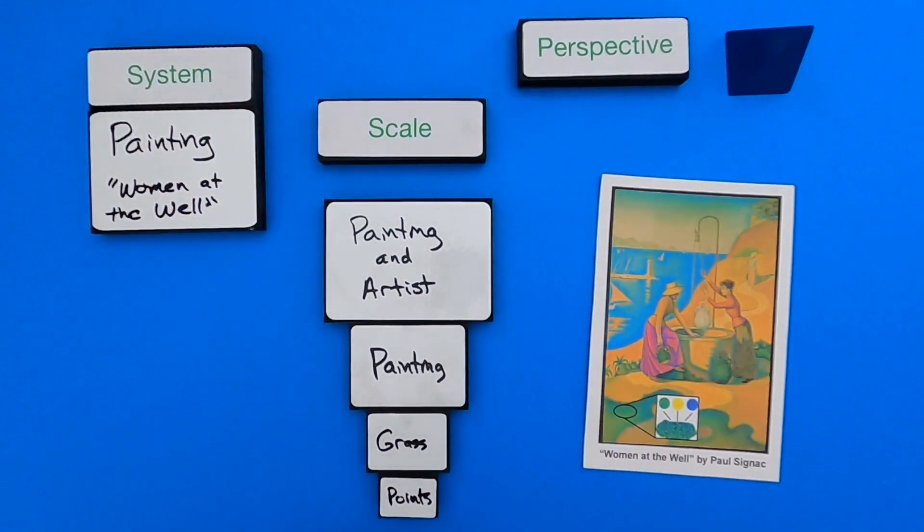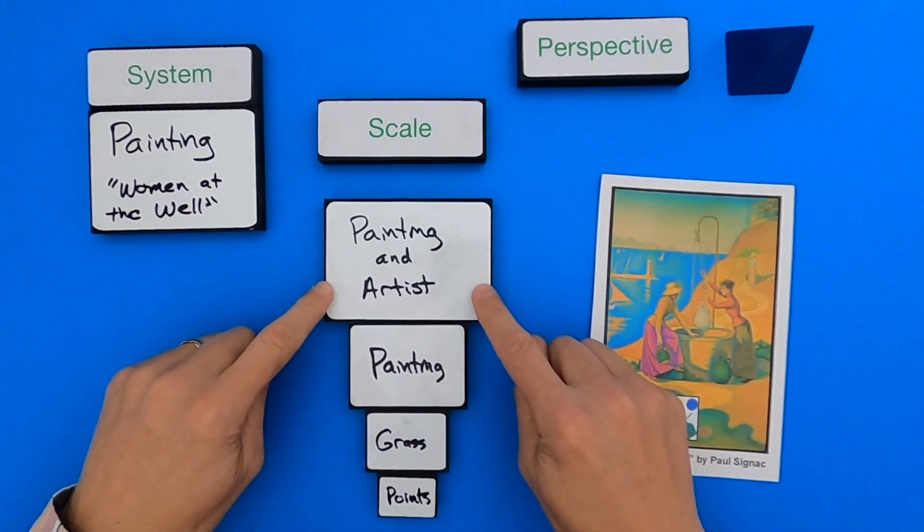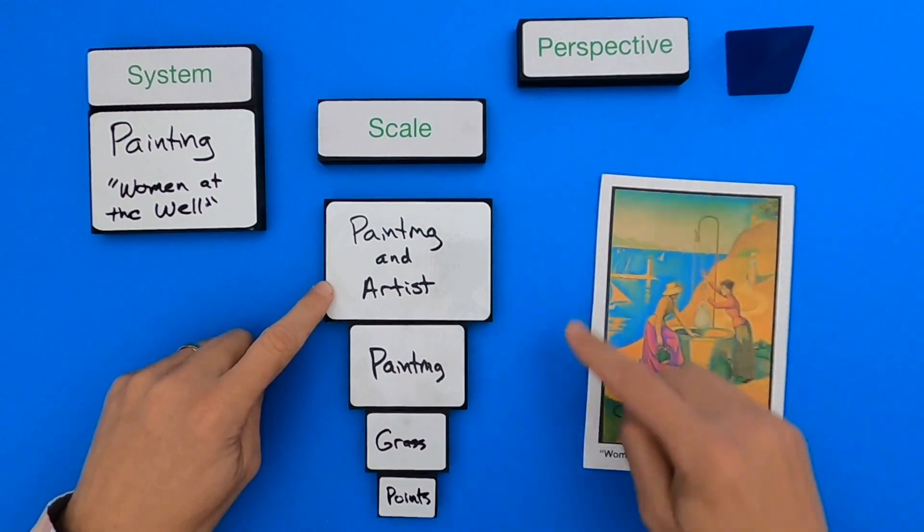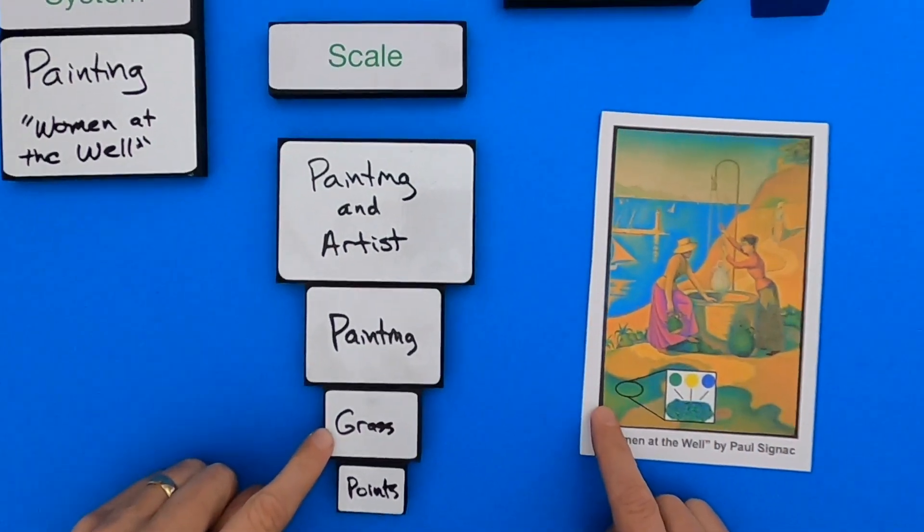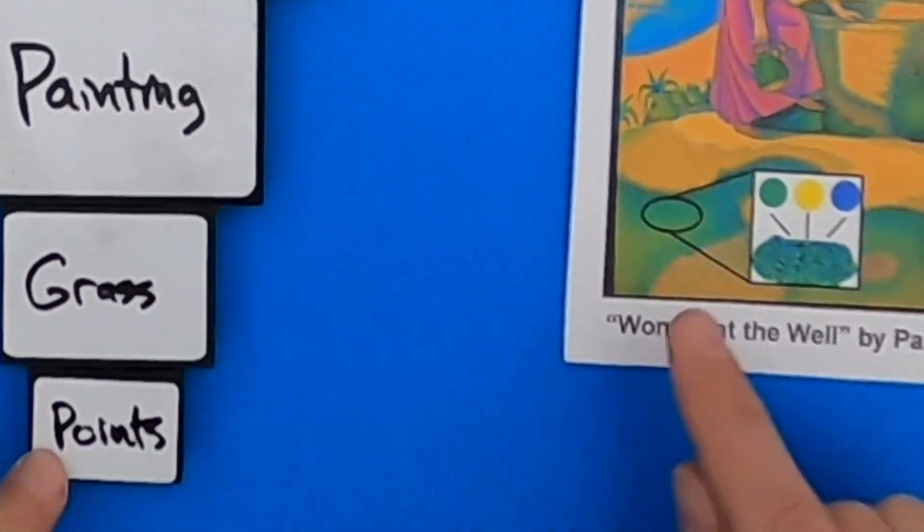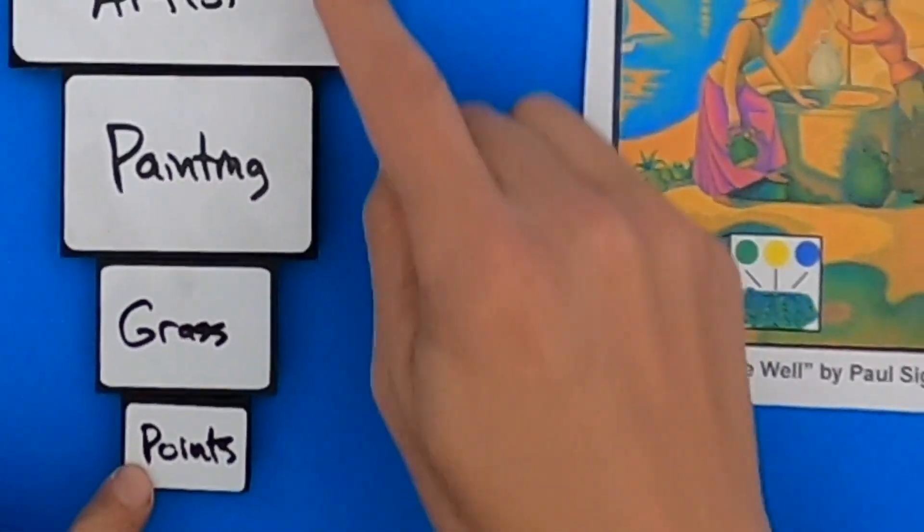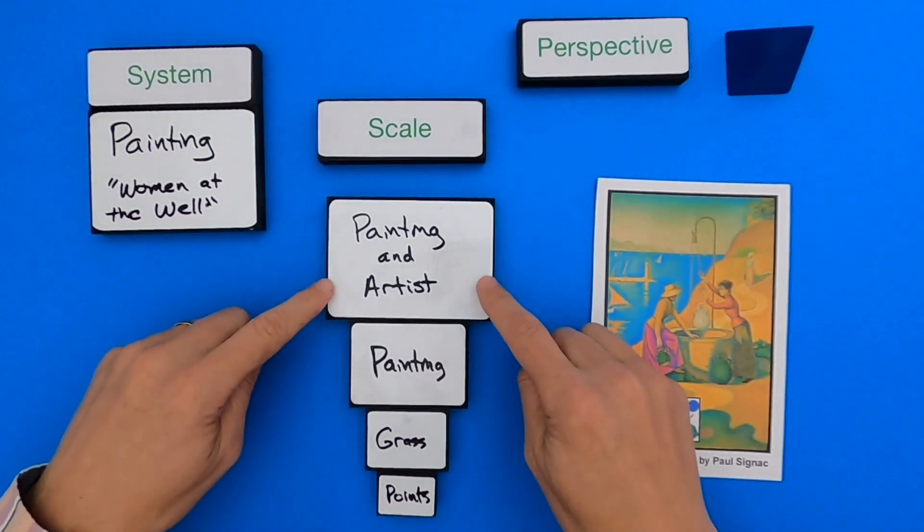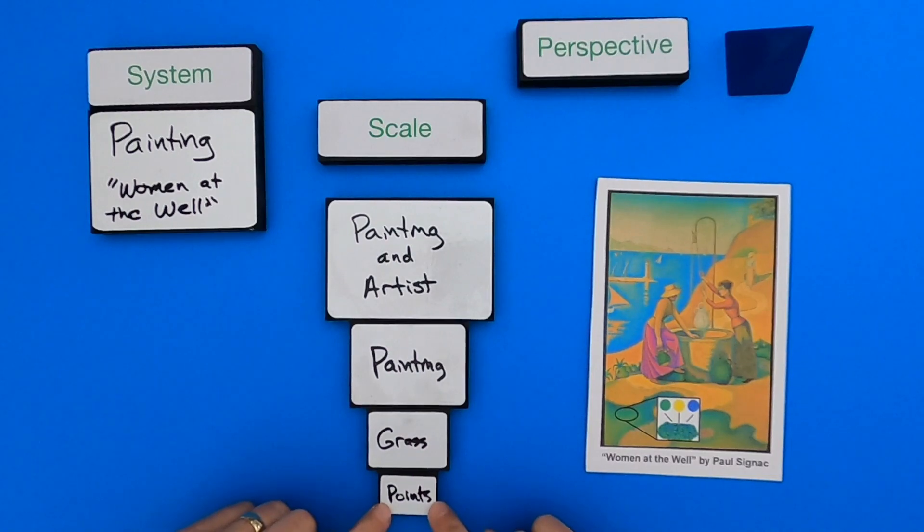So I've set up a hierarchy here. So the painting is right here in my scale. What's bigger than that obviously is the painting and the artist who painted it. What's smaller than that, in the painting you have some grass and then within the grass you see these little points that make up not only the grass but the whole painting. So I see these different scales. So this is a system which contains a system, which contains a system, which contains a system.